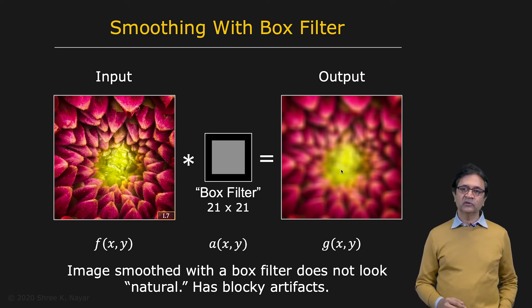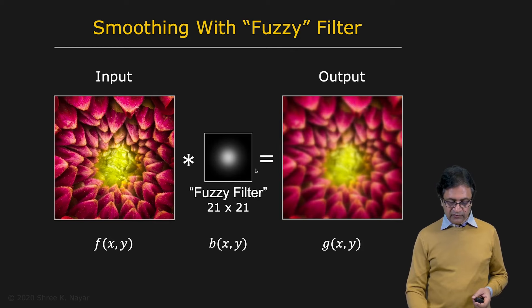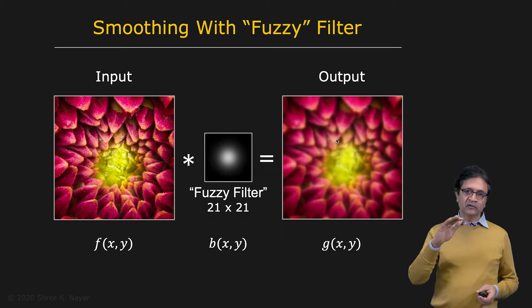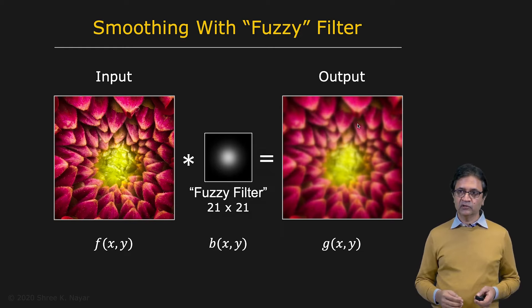So to resolve this, what you might want to use is what's called a fuzzy filter. So here you have a fuzzy filter. Again, its size is 21 by 21. But in this case, you have a maximum value in the center. And you make sure that the value drops as you move away from the center. And it's also rotationally symmetric. So now you get smoothing. Indeed, some of the fine grain undulations are gone. But at the same time, you don't see any of these blocky artifacts. It's a more natural looking image.